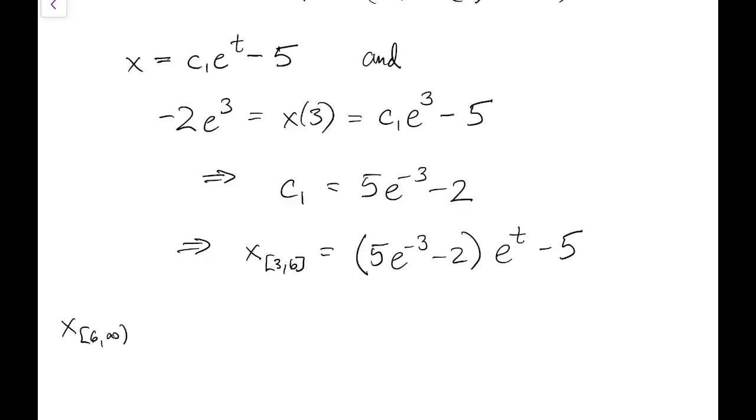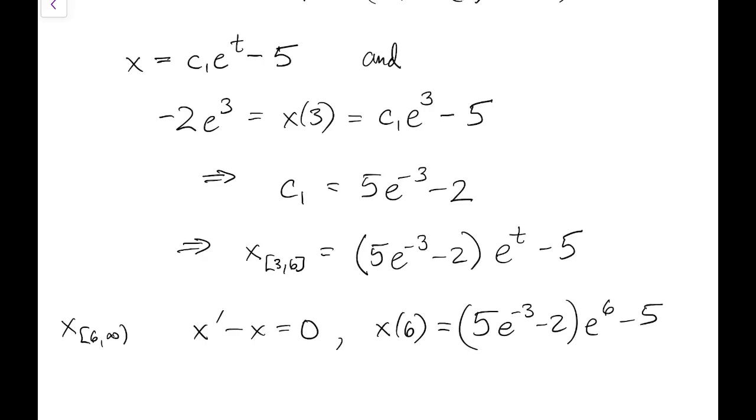Then we finally have to solve starting at time t equal to 6. Now over this time interval, the forcing function is again 0, so we again have a homogeneous problem. And now the solution is given at time 6 from the previous segment that we just found with t equal to 6.